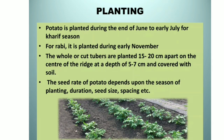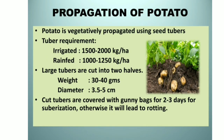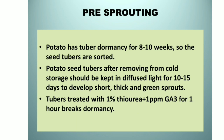Propagation of potato: potato is vegetatively propagated using seed tubers. Tuber requirement for irrigated conditions is 1500 to 2000 kg per hectare and for rain-fed it is 1000 to 1250 kg per hectare. Large tubers are cut into two halves weighing 30 to 40 grams with a diameter of 3.5 to 5 cm. Cut tubers are then covered with gunny bags for two to three days for wound healing; otherwise it will lead to rotting.